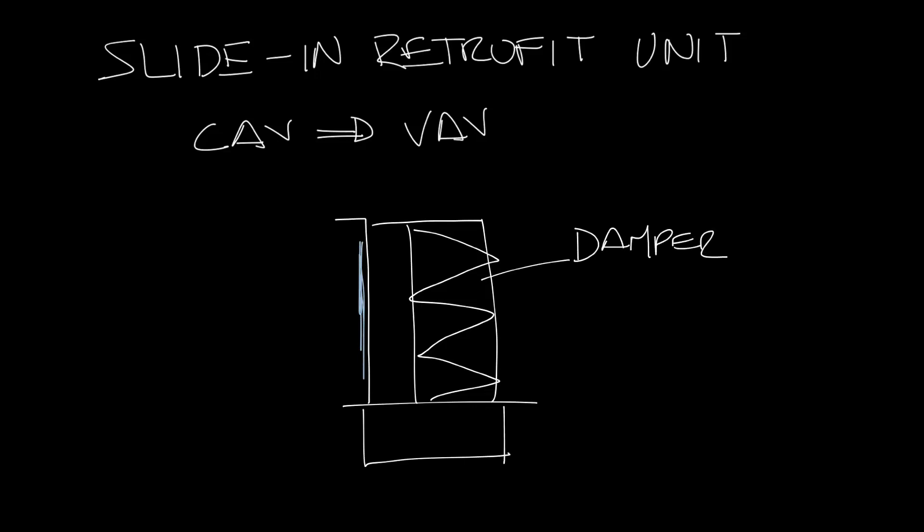Let's label this the damper. The flow sensor would be in a hole right here. That's the mounting plate, and then the control box.